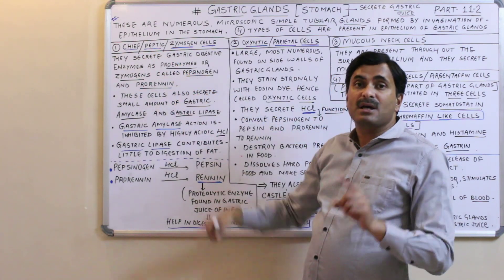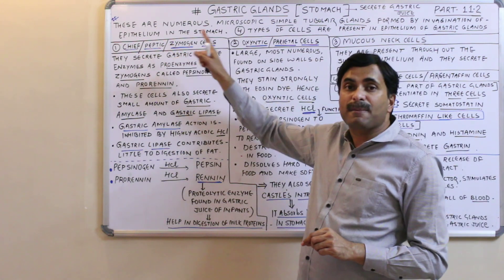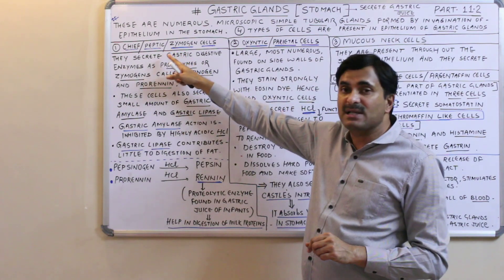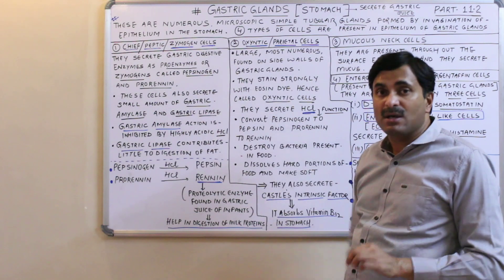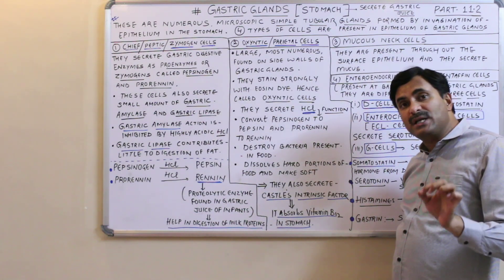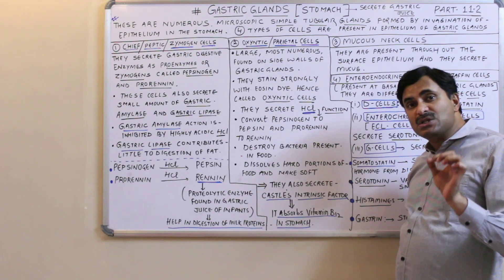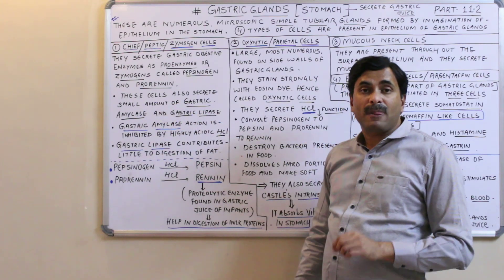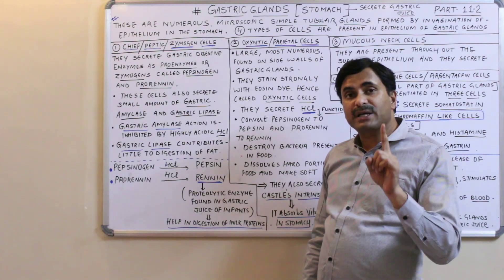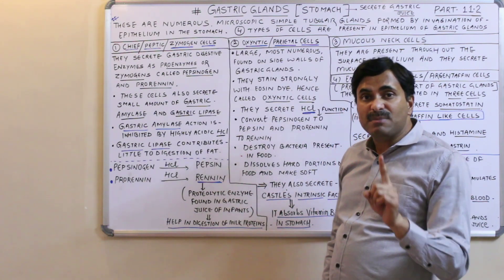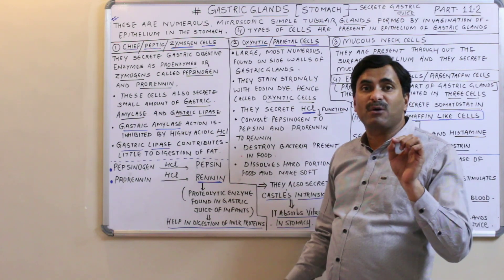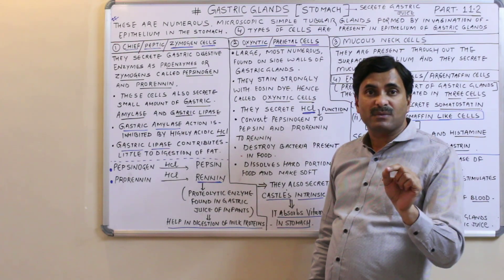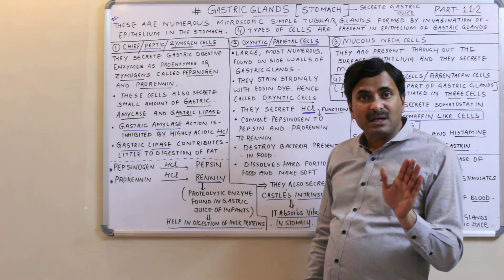Chief cells can also be called peptic cells or zymogen cells. In addition to pepsinogen and pro-renin, these chief cells also secrete a small quantity of gastric amylase enzyme and gastric lipase enzyme. However, the action of gastric amylase is inhibited by the highly acidic HCl found in the stomach, and that is why there is no digestion of carbohydrates in the stomach.